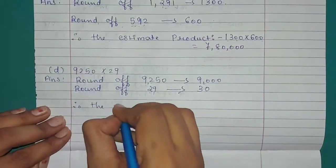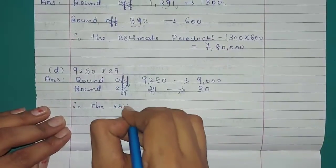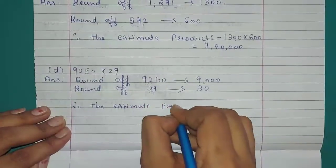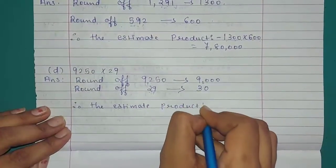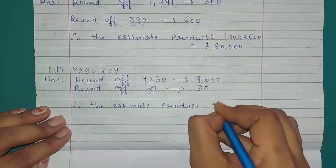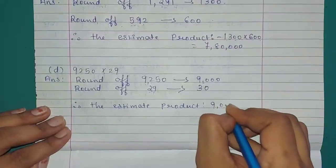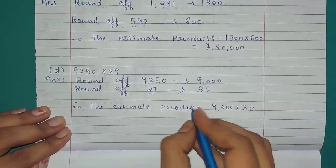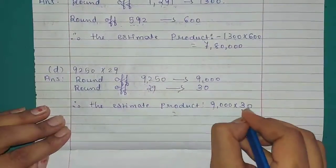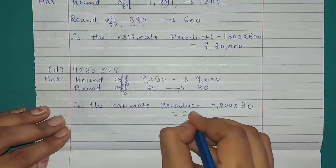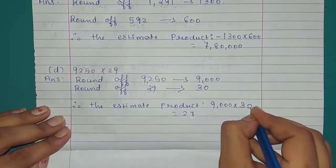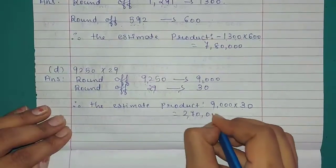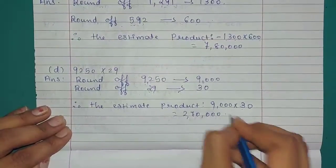Therefore, the estimated product equals 9,000 multiplied by 30. Multiplying 9 by 3 gives 27, and we write 4 zeros. So the answer is 2,70,000.